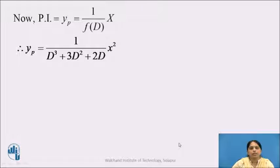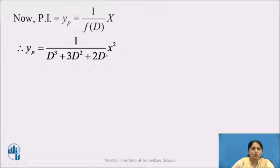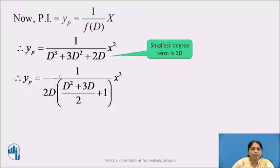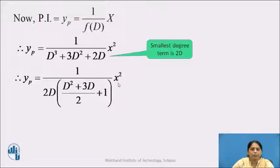Now let us find the particular integral PI, defined as 1 upon f(D) into x. So yp = 1/(D³ + 3D² + 2D) into x². To apply the x^m case, we express f(D) as 1 ± phi(D) by taking the lowest degree term as common. Here the lowest degree term is 2D, so taking it as common gives yp = 1/(2D) · 1/(1 + D²/2 + 3D/2) · x², which gives the bracket as (1 + d²/2 + 3D/2) operated on x².